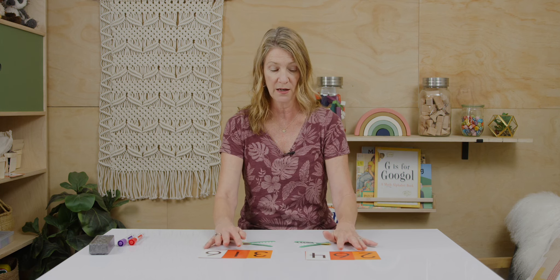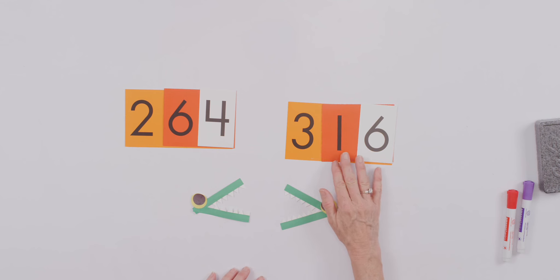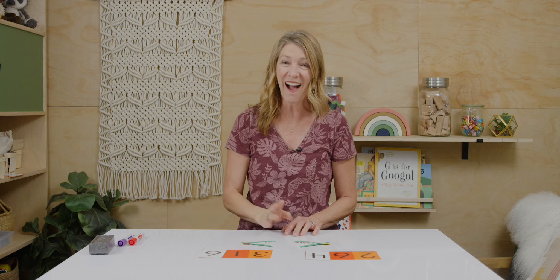First I want you to take a look at this number and read it to your teacher. Nicely done. Two hundred sixty-four. I did hear some of you say two hundred and sixty-four — let's just get rid of that. Just two hundred sixty-four. And then let's read this number. You got it! Three hundred sixteen.